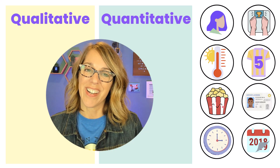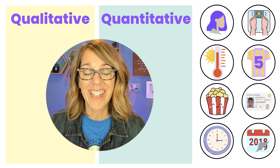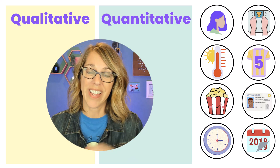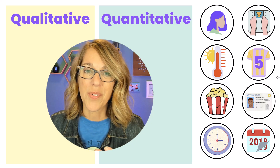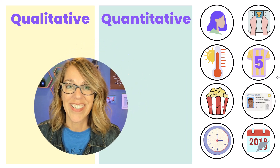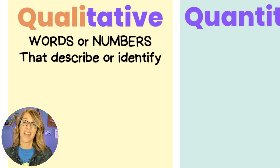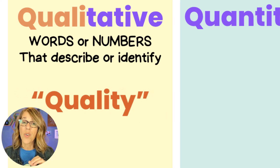All of the variables in statistics can be classified as either a qualitative variable or a quantitative variable. Let's start with qualitative variables. These are often words, but they could also take on numbers. The key thing is that these describe or identify — think quality.